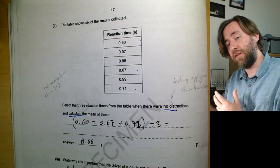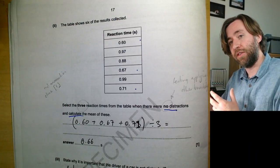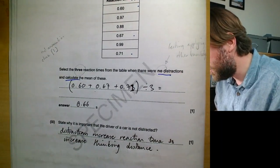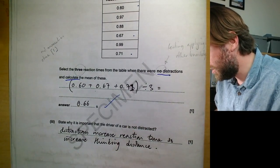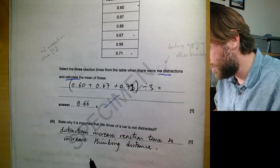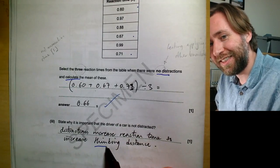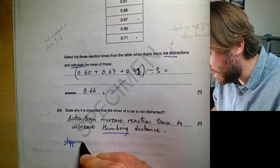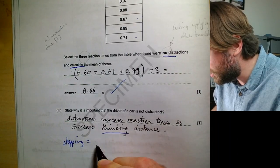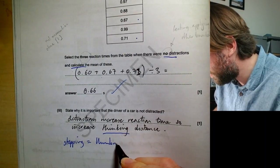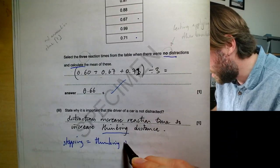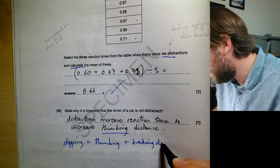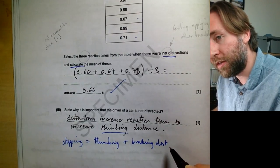State why it's important for the driver not to be distracted: distractions increase reaction time, therefore they increase thinking distance. Remember: stopping distance equals thinking distance plus braking distance.